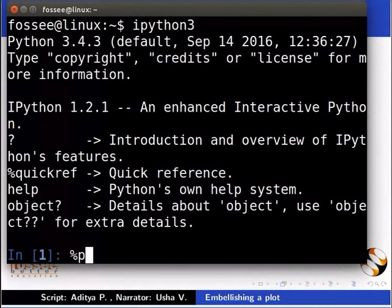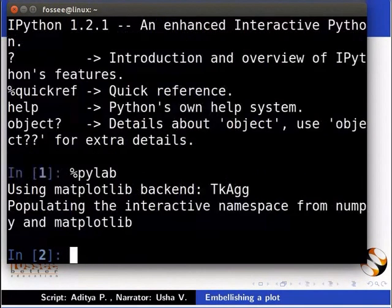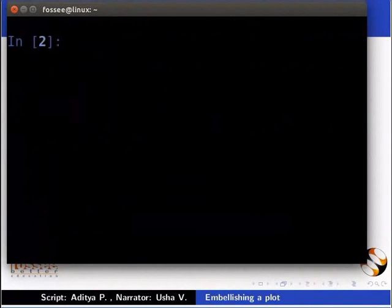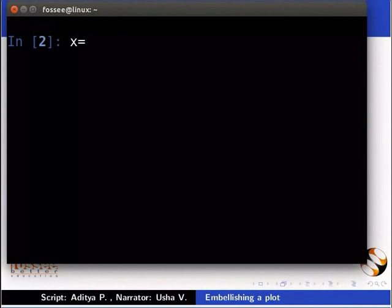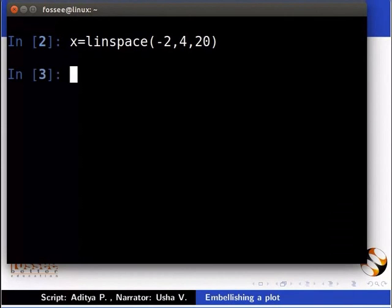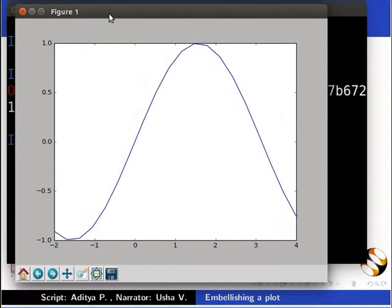Type %PyLab and press enter. We shall first make a simple plot and start modifying it. Type x is equal to linspace inside the brackets minus 2 comma 4 comma 20 and press enter. We can now see the sin curve in the plot window. The default color and thickness of the line is as decided by PyLab. Let us now change the parameters of this curve.